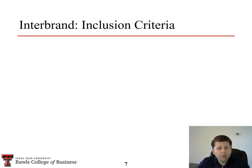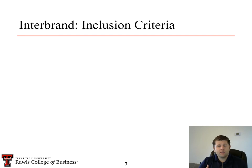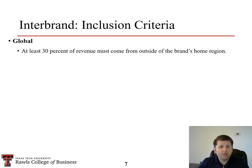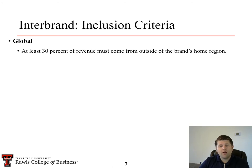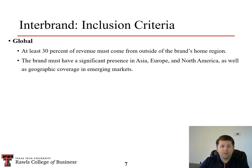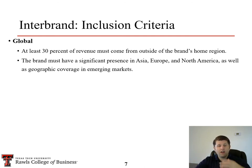It's important that whenever Interbrand conducts this methodology and rates brands, they have specific inclusion criteria. One is that the brand has to be global — meaning 30% of their revenue comes from outside the brand's home region. So if the brand is located in the United States, they have to derive 30% of their revenue from outside the U.S. They also have to have a significant presence in different regions — Asia, Europe, North America — and cover emerging markets such as India or Brazil.